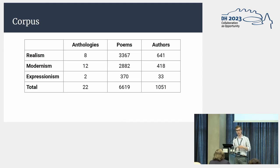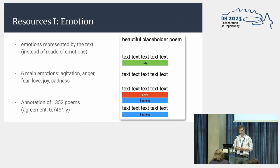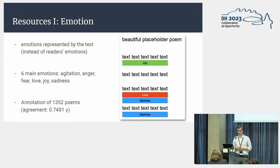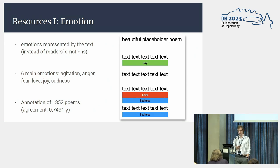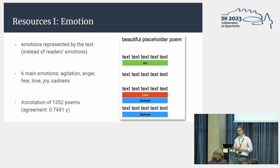We are interested in how different factors are related to emotion, so in the first step we have to find out what kind of emotions the poems represent. We focus on emotions represented by the text itself — for example, whether a character or the speaker of the poem is happy — not emotions of readers. We assign six main emotions to lines of the poem: agitation, anger, fear, love, joy, and sadness, using a discrete emotion model. We annotated more than 1,300 poems of our corpus manually, achieving a gamma agreement of 0.75. For the remainder of this talk, we only use these manually annotated poems.